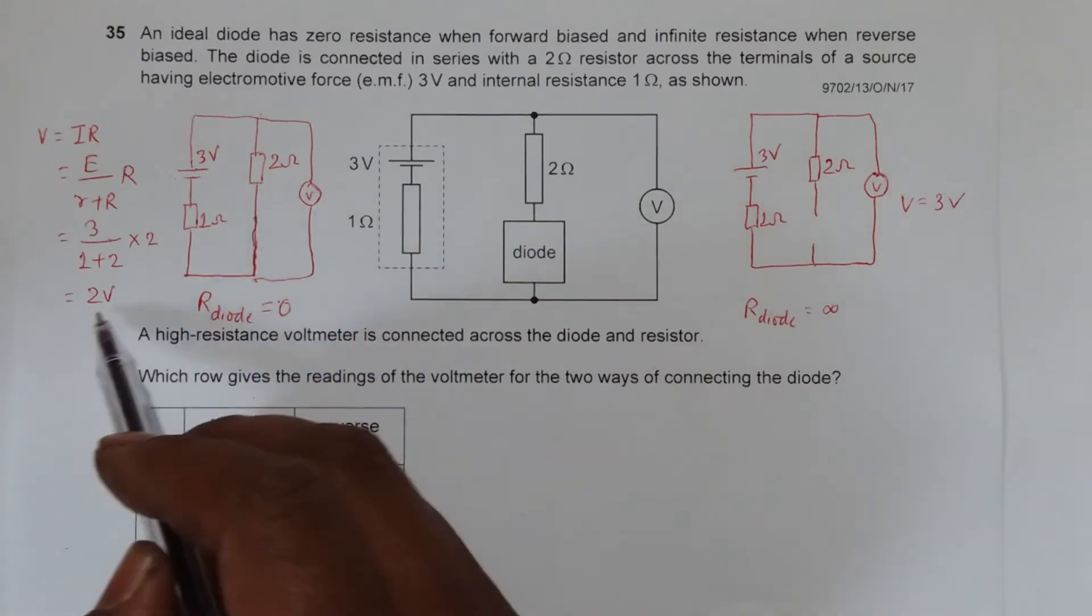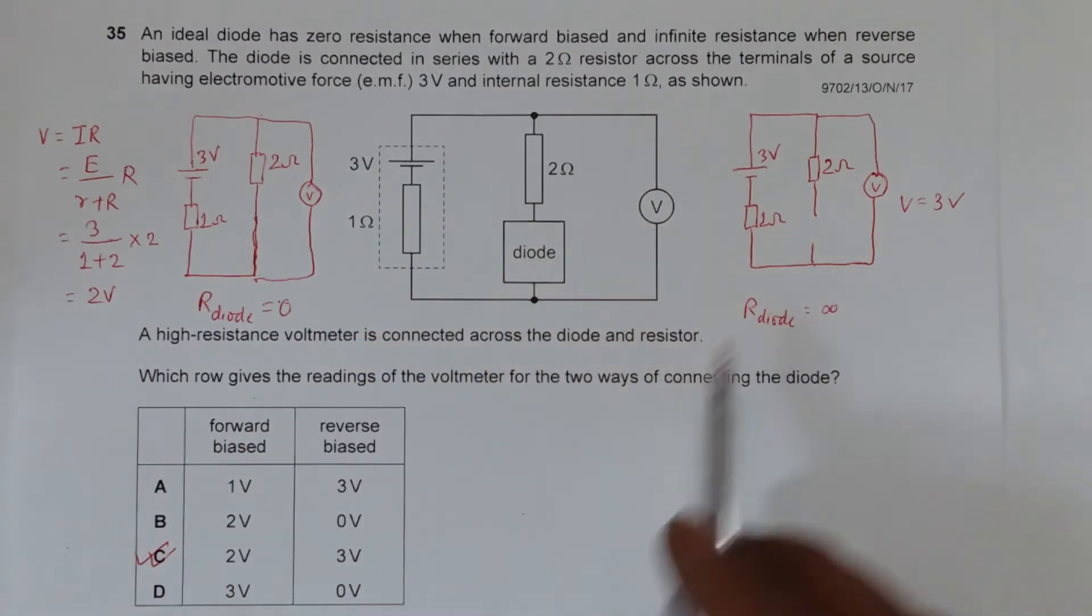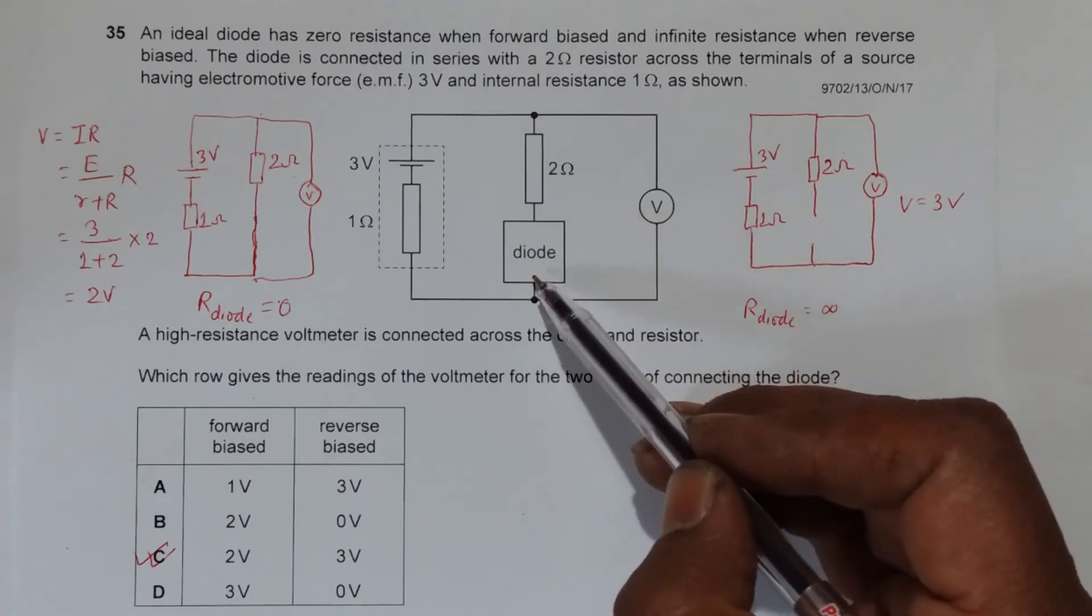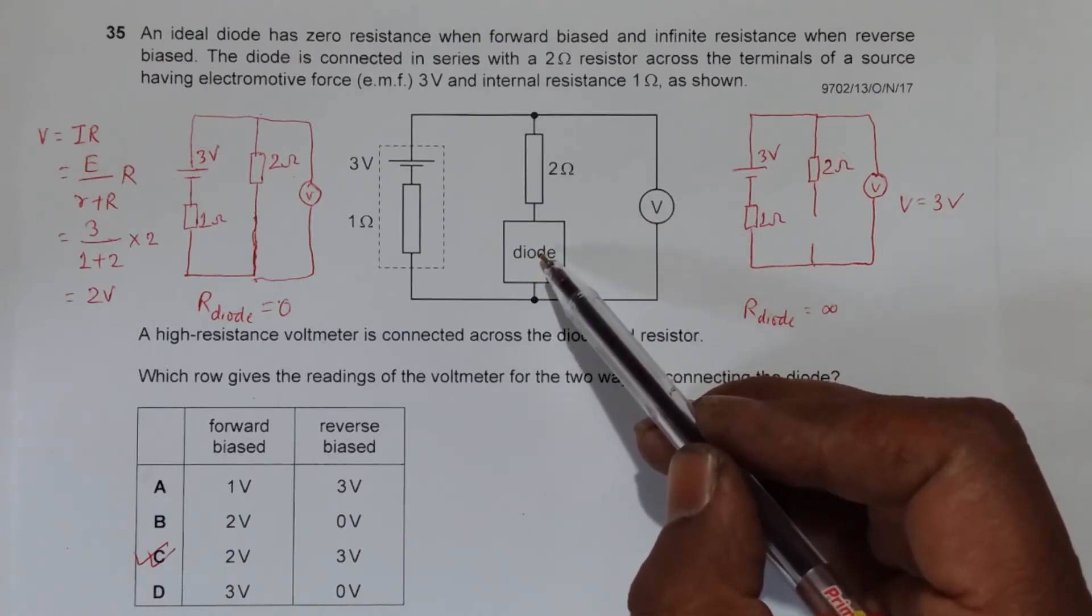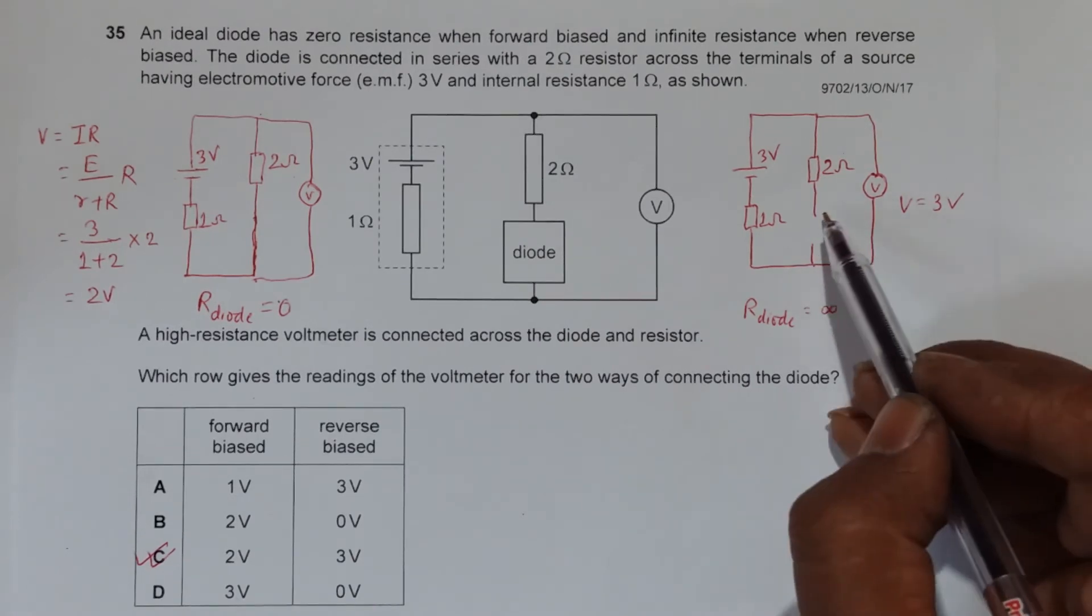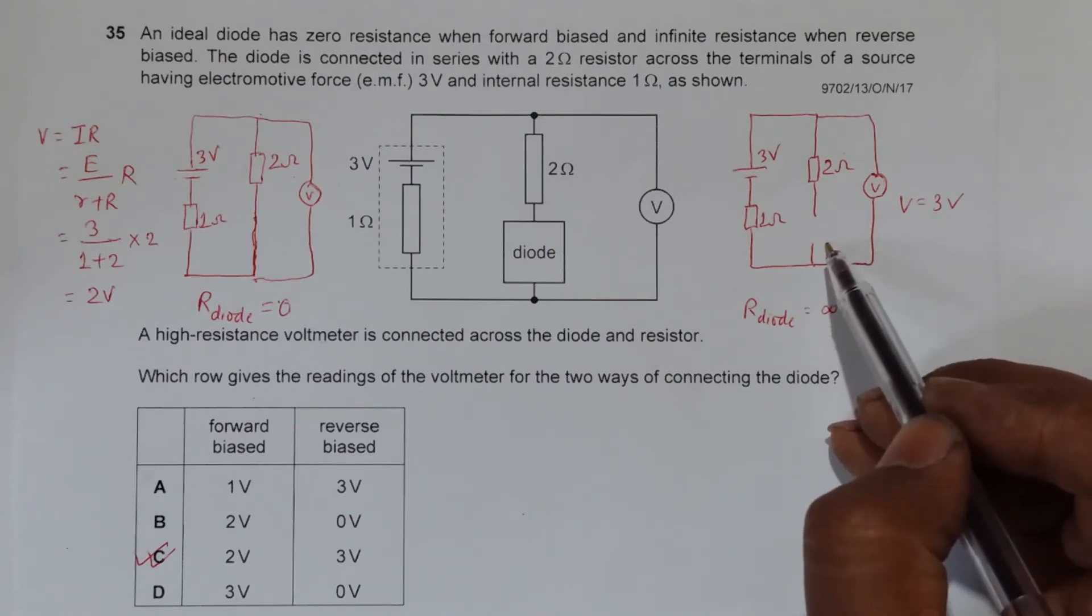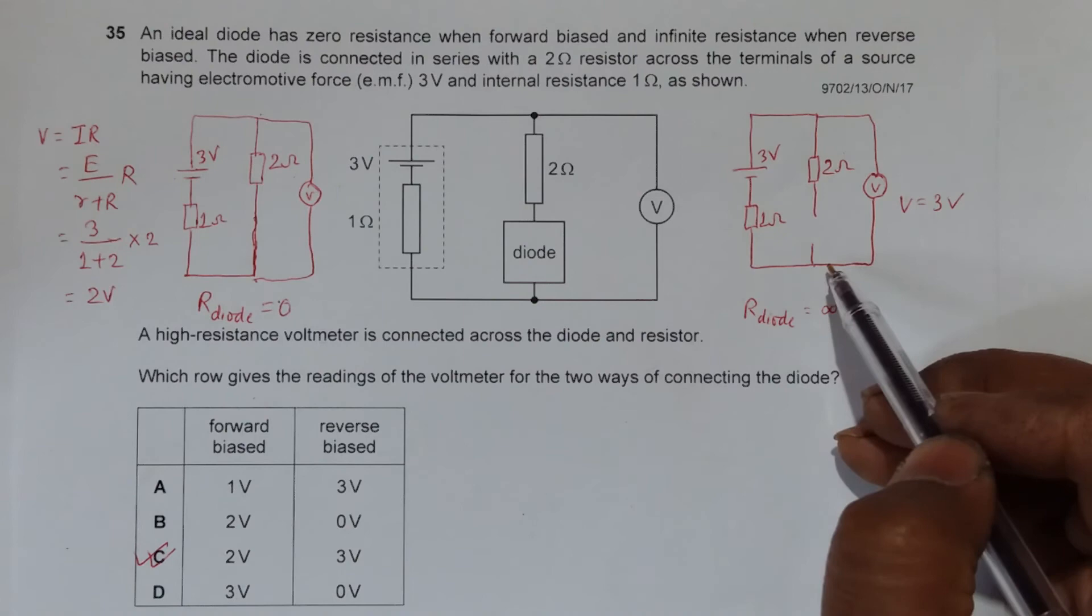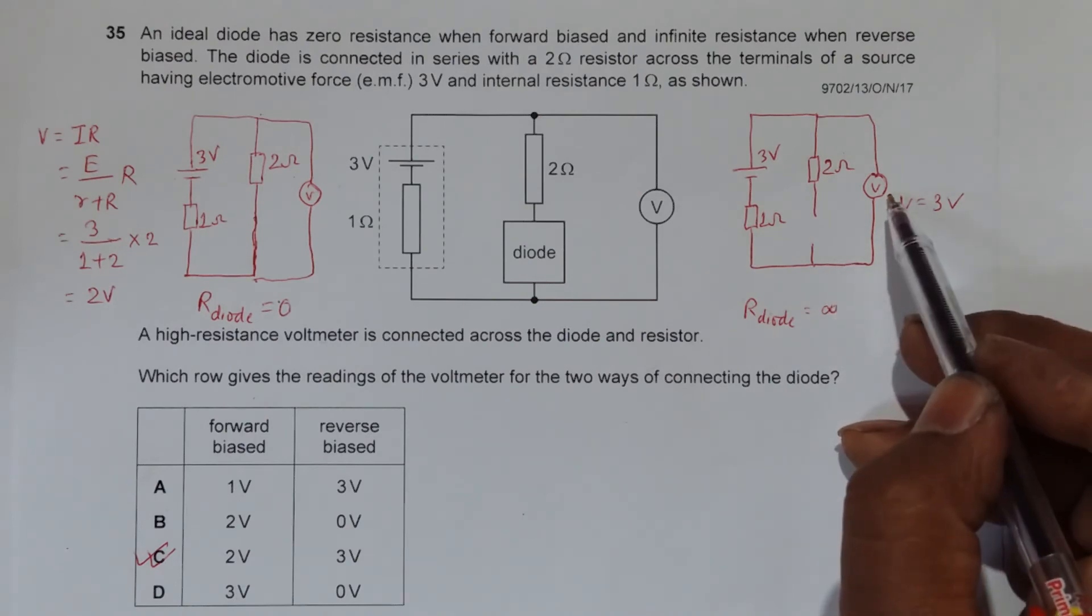Then if we consider that it has infinite resistance when it is reverse biased, I can replace this by a break, so that means the circuit is open, which means the resistance here is infinite. Or we can even say this whole resistance is infinite.